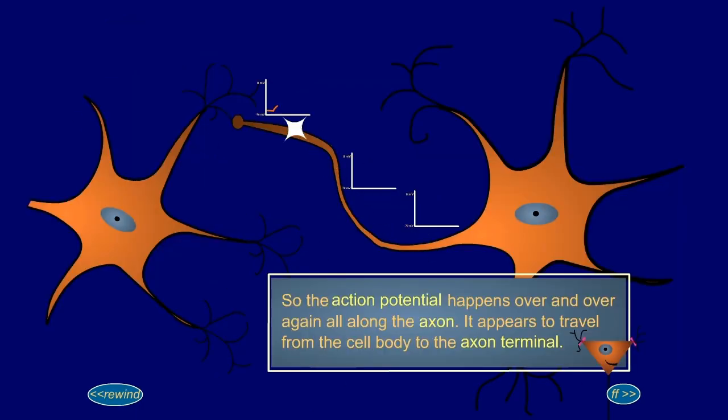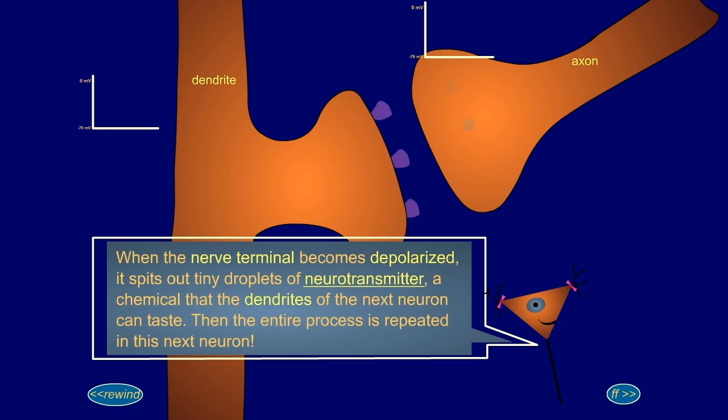So the action potential happens over and over again all along the axon. It appears to travel from the cell body to the axon terminal. When the nerve terminal becomes depolarized, it spits out tiny droplets of neurotransmitter, a chemical that the dendrites of the next neuron can taste. Then the entire process is repeated in this next neuron.